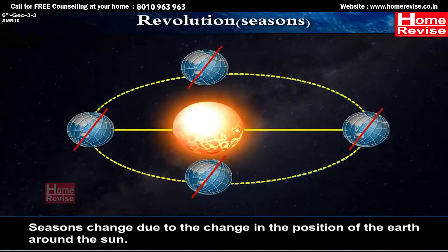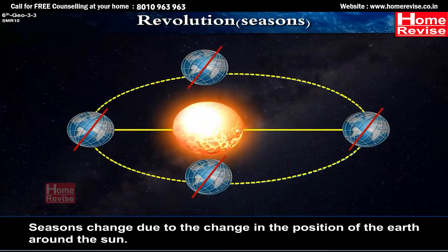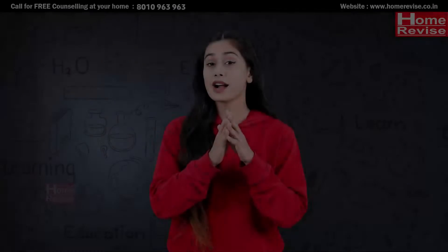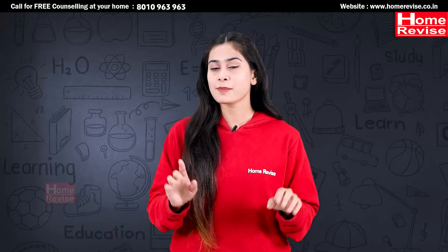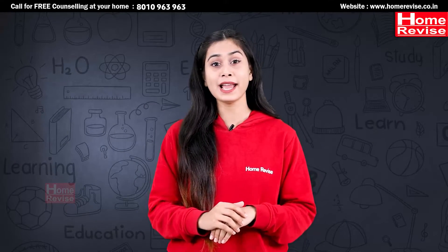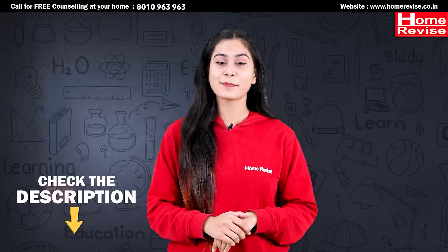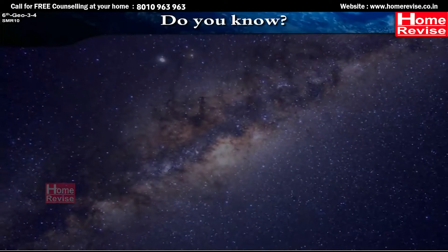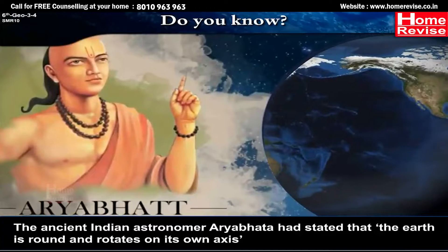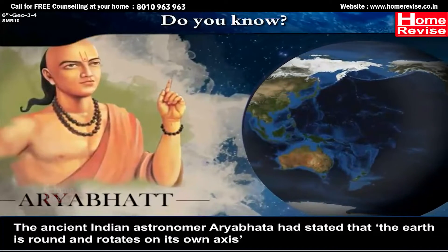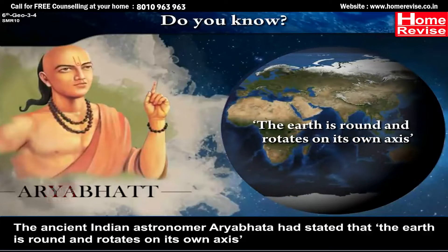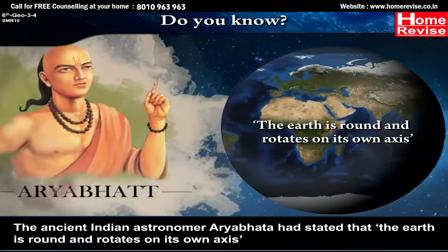Seasons change due to the change in the position of the Earth around the Sun. The ancient Indian astronomer Aryabhatta had stated that the Earth is round and rotates on its own axis.